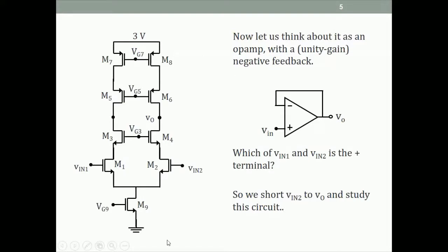We put this circuit in a unity gain feedback configuration. We have two inputs and the output, and we want to connect the output to the negative input of the amplifier. The first question is which input is negative. If the output is taken here, from gate to drain there is an inversion, so this is positive and this is negative.